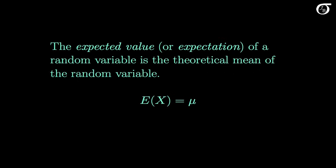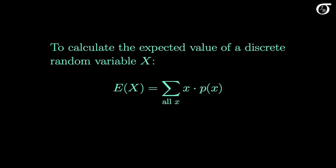How we calculate the expected value differs between discrete and continuous random variables. For the rest of this video I'll be working with the expected value of discrete random variables; some adjustments will need to be made when we discuss continuous random variables. To calculate the expected value of a discrete random variable X, we multiply each possible value of x by its probability of occurring and add that up over all x. This means the expected value is a weighted average of the values of x, weighted by their probabilities of occurring.